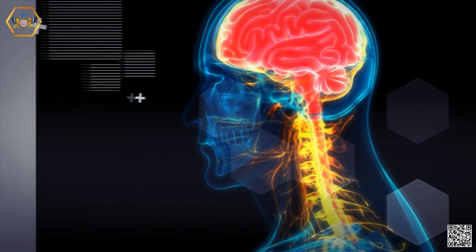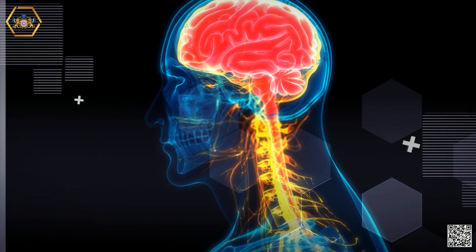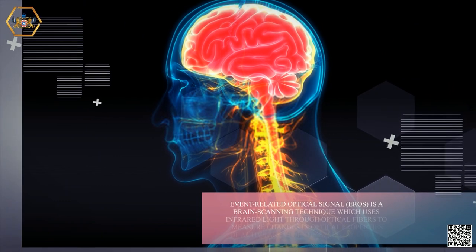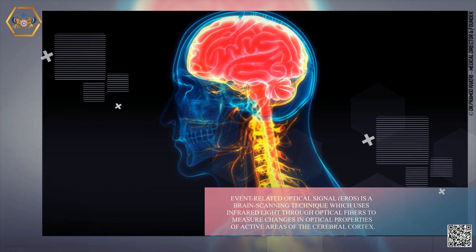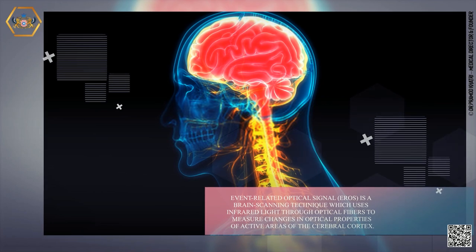Event-related optical signal, EROS, is a brain scanning technique which uses infrared light through optical fibers to measure changes in optical properties of active areas of the cerebral cortex.